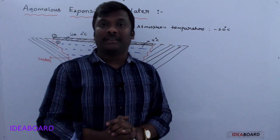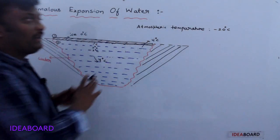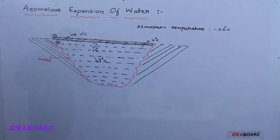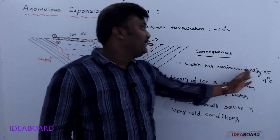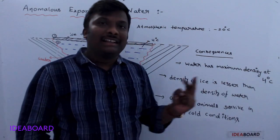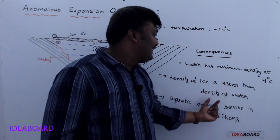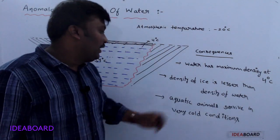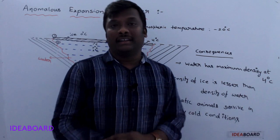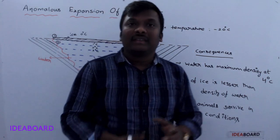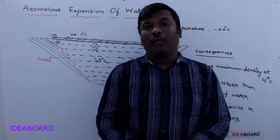This is another consequence of the anomalous behavior of water. So the three consequences are: first, water has maximum density at 4 degrees Celsius; second, the density of ice is lesser than the density of water; and third, aquatic animals survive in very cold conditions. This is about anomalous expansion of water.